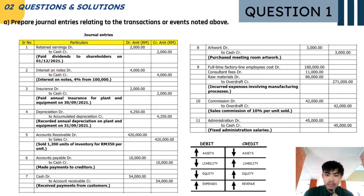The commission account is debited and the overdraft account is credited as we have a sales commission of 10% per unit sold. Finally, for fixed administration salaries, the administration account is debited and the cash account is credited.